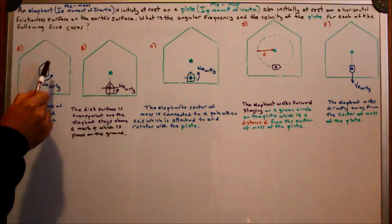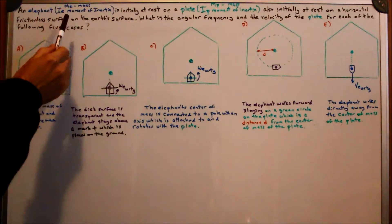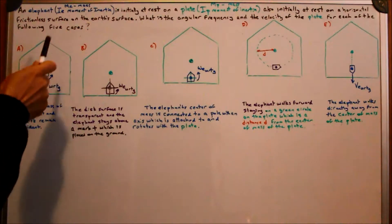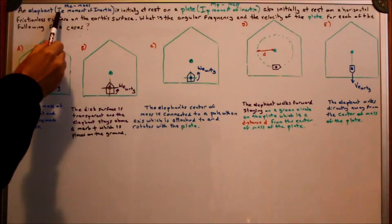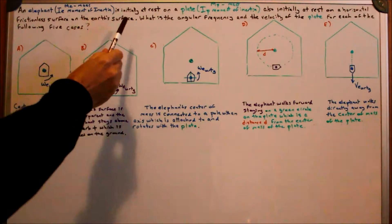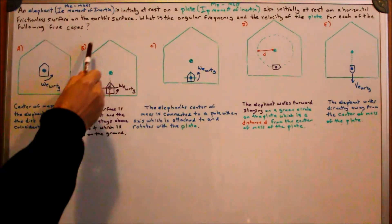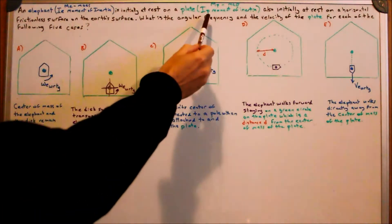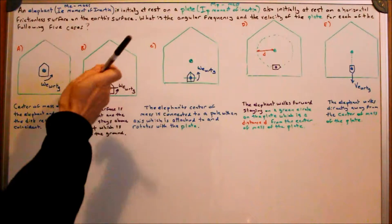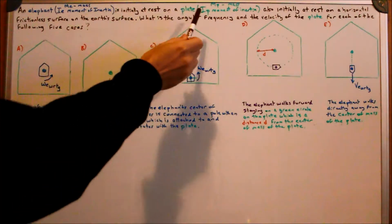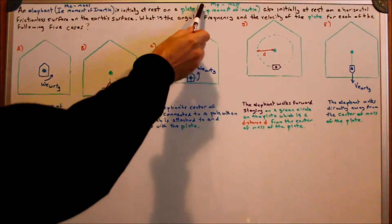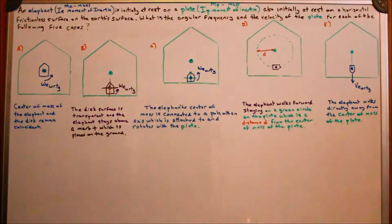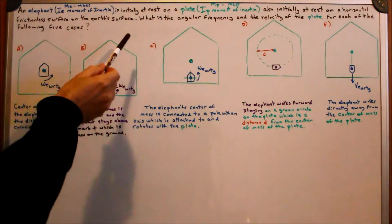Consider an elephant which has a mass of m sub e and a moment of inertia in the top view around its own center of mass of I sub e, who is initially at rest on a plate which has mass m sub p and moment of inertia in the top view around its own center of mass of I sub p, which is also initially at rest on a horizontal frictionless surface on the earth's surface.